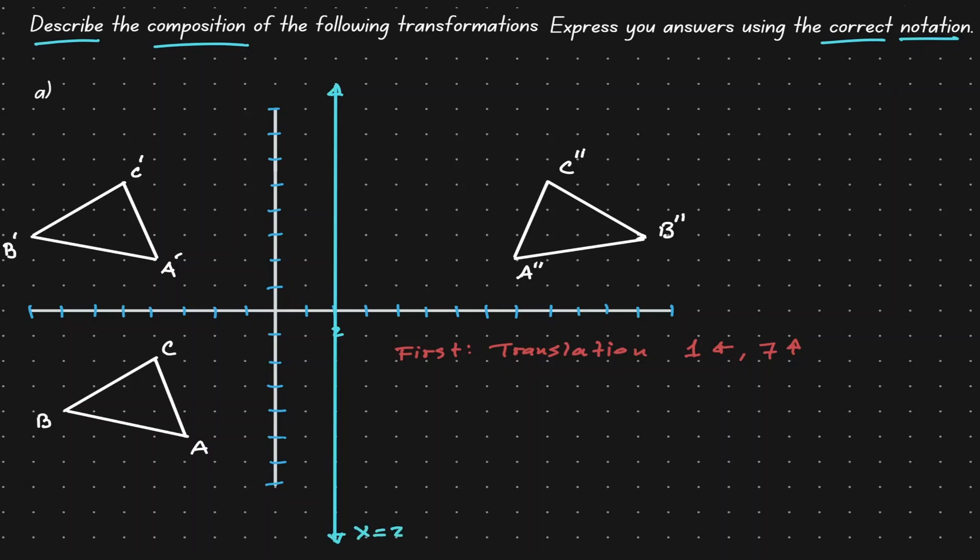We have already shown that this works with A'. Now let's see if this works with B'. From B' to our line of reflection, that is 10 units. And from our line of reflection to the reflected position, it's also 10 units.